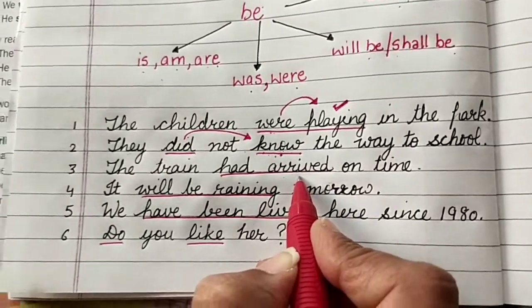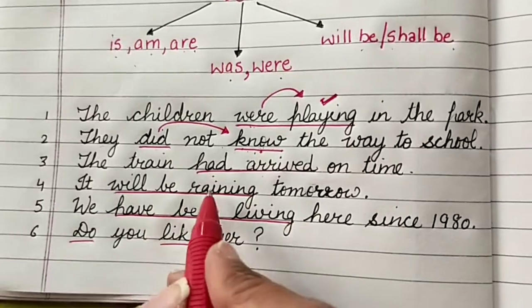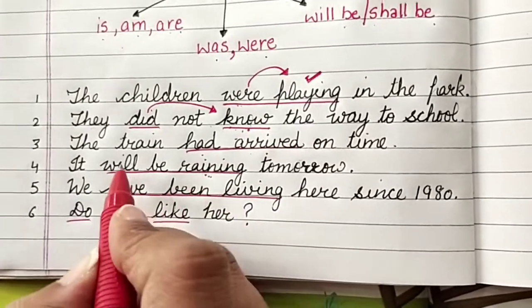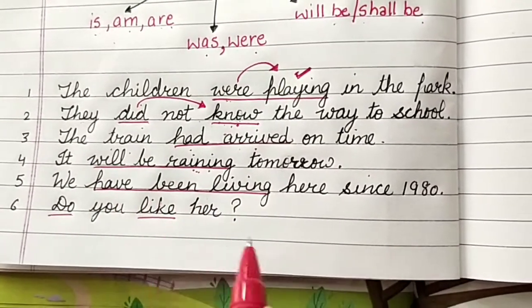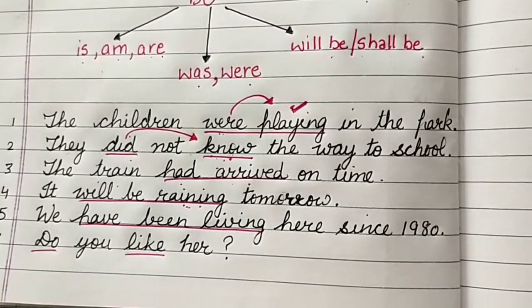Again, arriving is the main action. Had is working as a helper. Similarly, raining. Now, this is the main action. Will be is helping this. Similarly, in these two. So what actually I want to highlight is, what are auxiliaries?